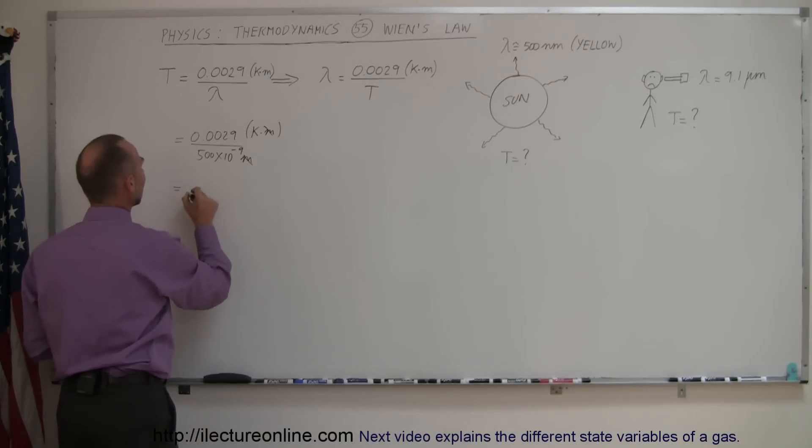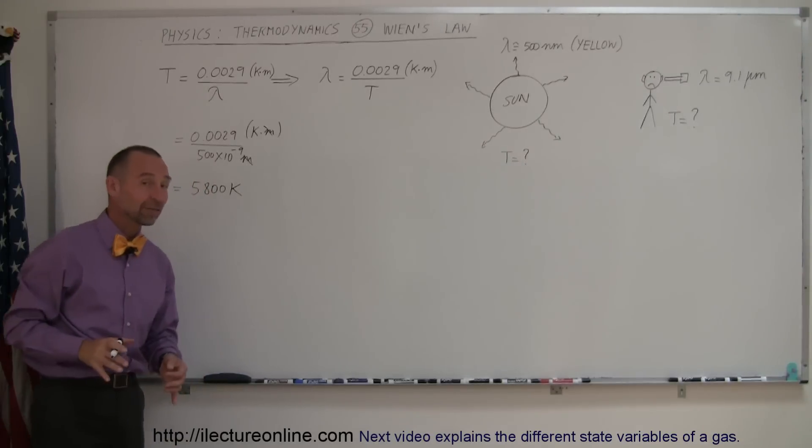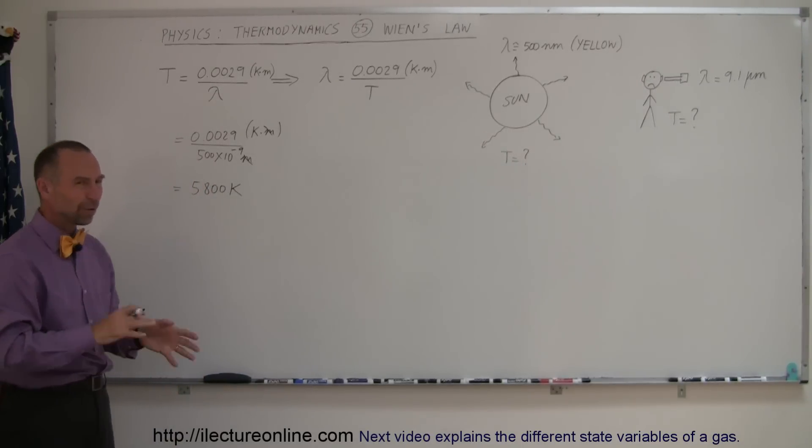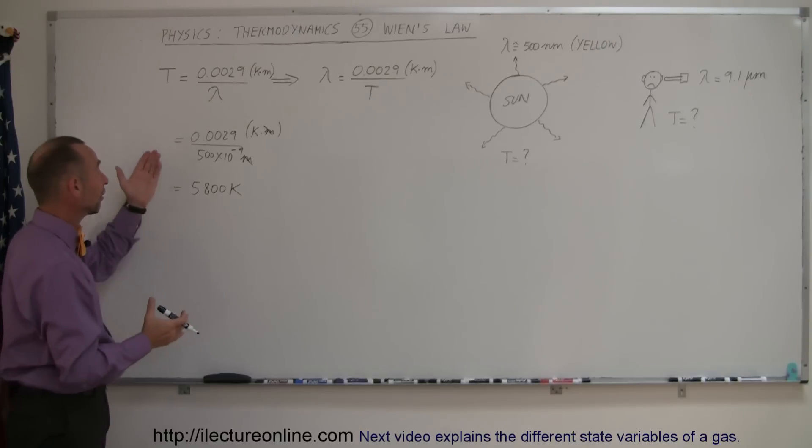We're left with Kelvin and that ends up being 5,800 Kelvin which is about 5,500 degrees centigrade or roughly about 10,000 degrees Fahrenheit. So the surface temperature of the Sun can very easily be calculated using Wien's law.